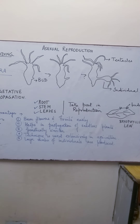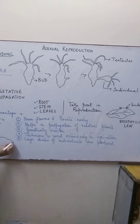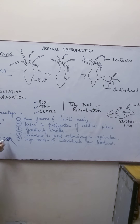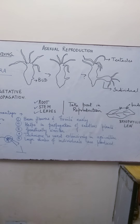Another example is the Bryophyllum leaf. The Bryophyllum leaf has certain areas known as notches on the border of the leaf. It is at these notches that a new bud will start developing. After sufficient growth, this bud will detach, fall on the soil, and will give rise to a new plant.